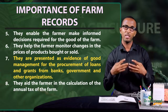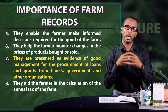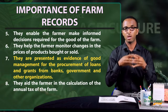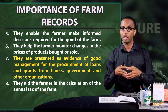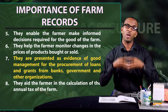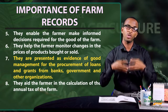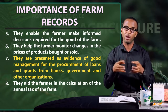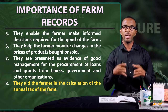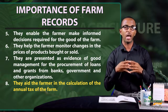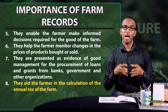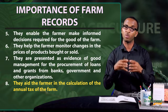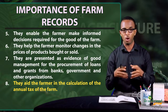Number seven, if a farmer wants to borrow money from a bank, a government agency, or other organizations like the World Bank, he will need to produce records of his farm to prove that he is managing it well. Lastly, farm records aid the farmer in the calculation of the annual tax of the farm. With accurate records, the farmer can calculate the amount he is supposed to pay as his annual tax to the government.